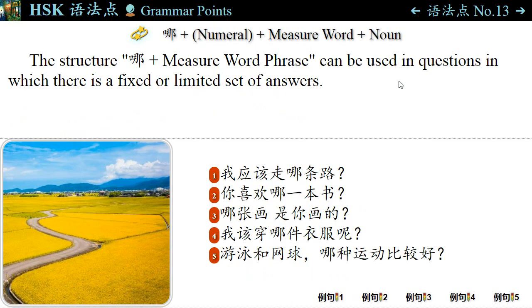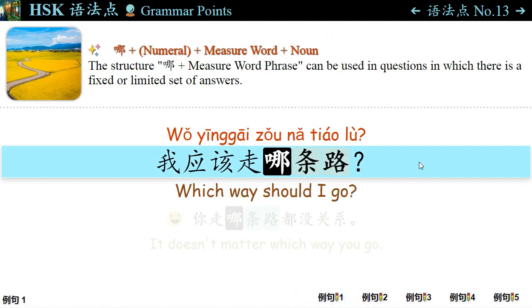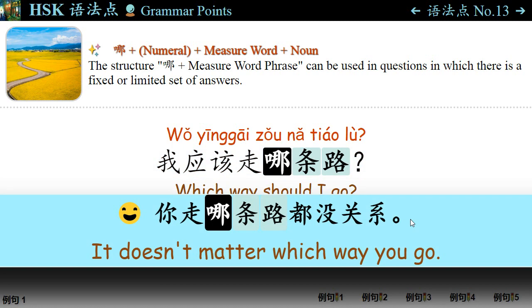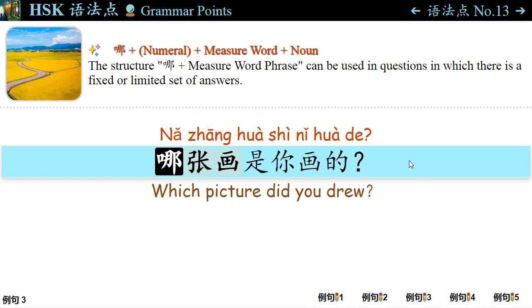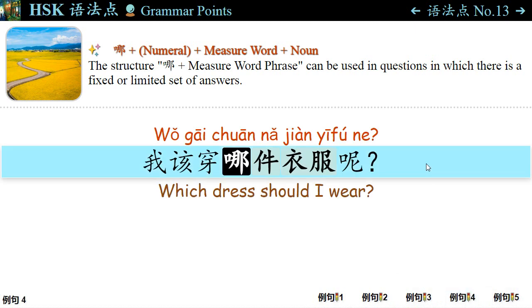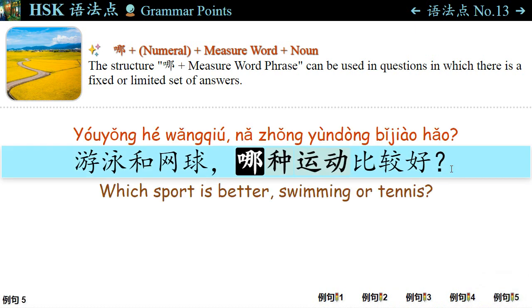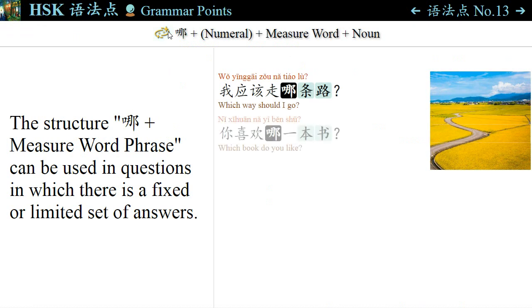语法点十三: The structure 哪 + Measure Word Phrase can be used in questions in which there is a fixed or limited set of answers. For example: 我应该走哪条路? — Which way should I go? 你走哪条路都没关系 — It doesn't matter which way you go. 哪一本书? — Which book do you like? 哪张画是你画的? — Which picture? 我该穿哪件衣服呢? — Which dress? 游泳和网球，哪种运动比较好? — 哪种运动? — Which sport? The structure 哪 + Measure Word + Noun can raise a question.